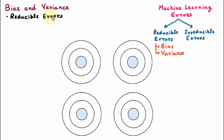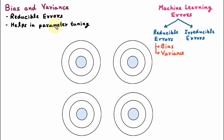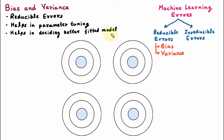We can reduce these errors and set the values so that the efficiency of the model can be improved. Bias and variance help in parameter tuning — by using the correct values of bias and variance, we can tune the parameters. Bias and variance also help in deciding a better fitting model. By adjusting the values of bias and variance, we can check which model is better fitted.